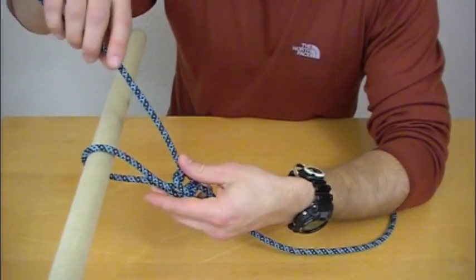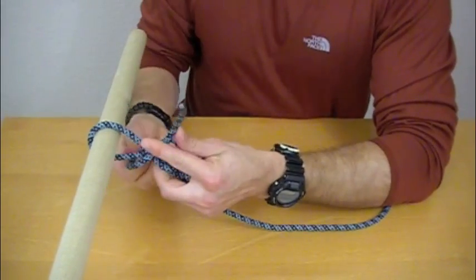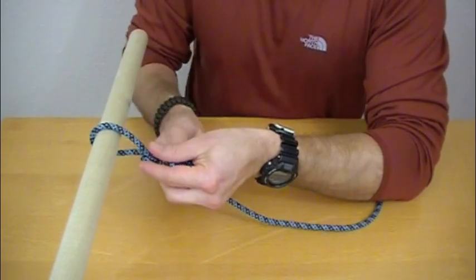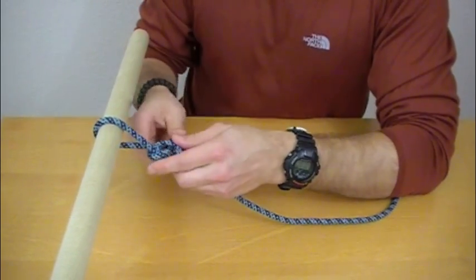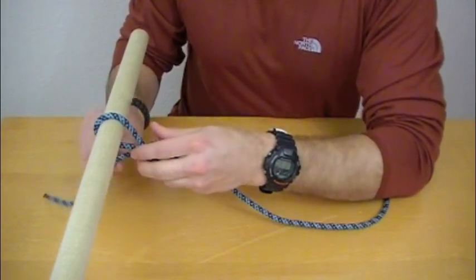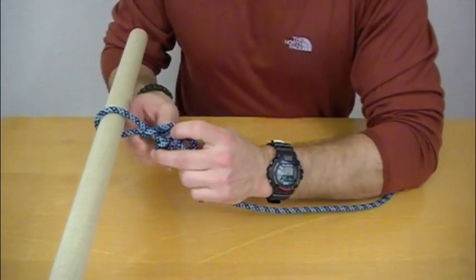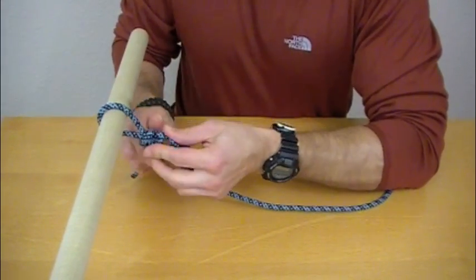Now all you're going to do to secure this knot is to make two half hitches. There's the first half hitch. And there's the second half hitch.